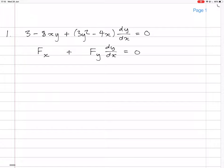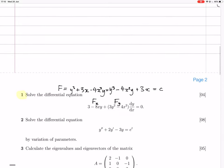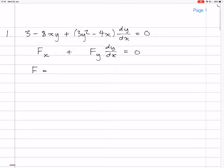So that means that f must equal, was it really 3 minus 8x, just 3? Yeah, it was. Okay, that means f will equal 3x minus 4x squared y.